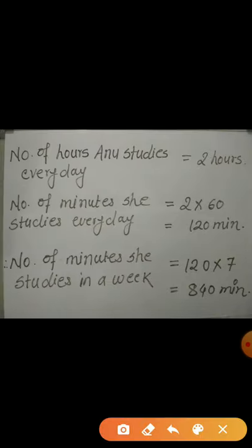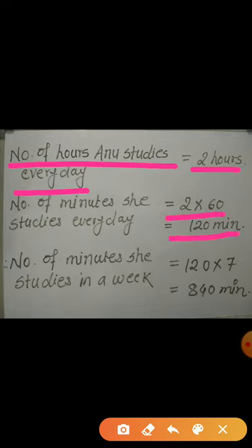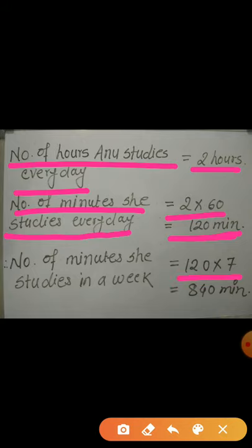Number of hours Anu studies every day: 2 hours. Converting to minutes: 1 hour = 60 minutes, therefore 2 hours = 2 × 60 = 120 minutes. Number of minutes Anu studies every day is 120. We are asked to find the number of minutes in a week, so I multiply 120 by 7, because 1 week equals 7 days. Therefore, number of minutes Anu studies in a week = 120 × 7 = 840 minutes.